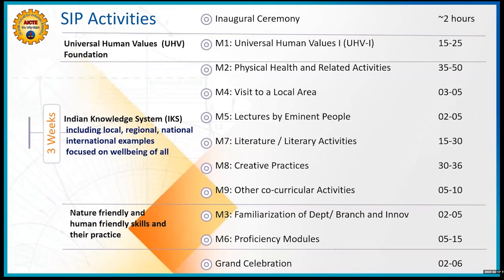There are nine modules broadly in three categories. One is the universal human values category. The second includes examples particularly taken from the Indian knowledge system, but including local, regional, national, and international examples focused on the well-being of all. The third category is skills, and we are only starting this exploration in the SIP, hoping it will continue as human-friendly and nature-friendly skills as education progresses. Today we are talking about module one: Universal Human Values 1.